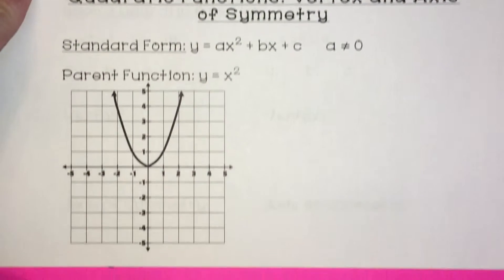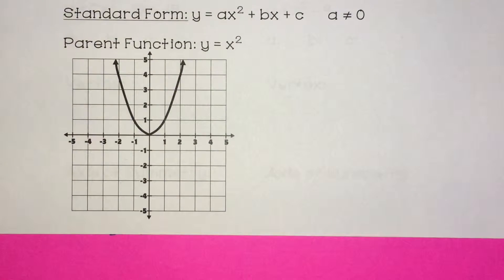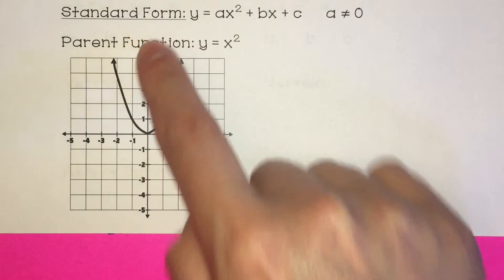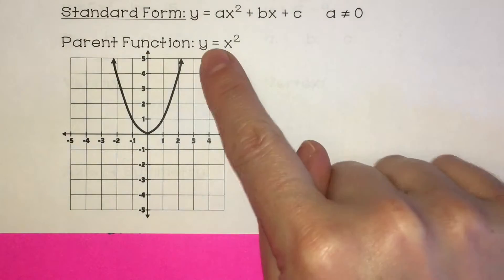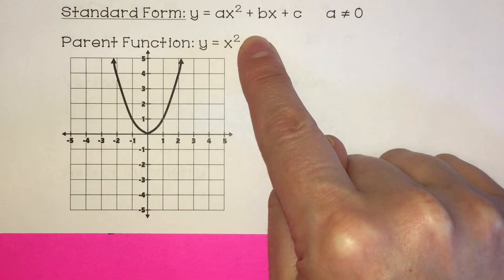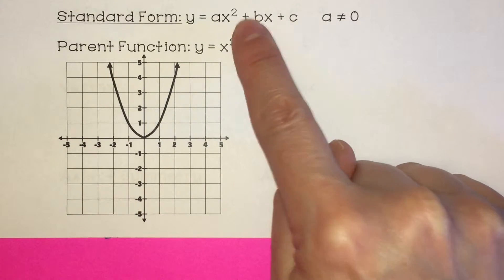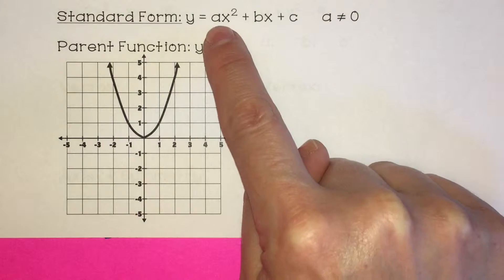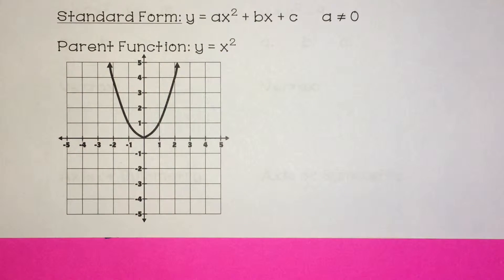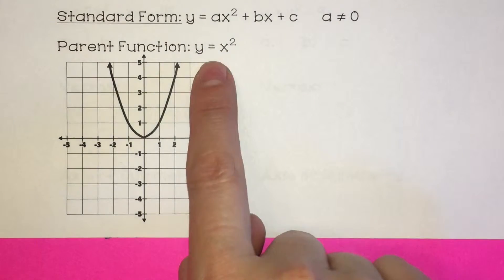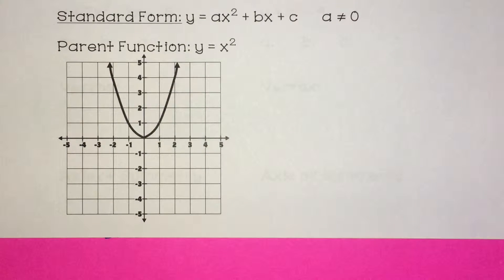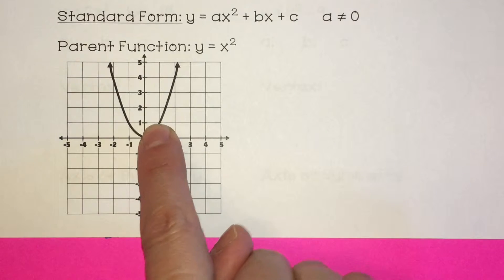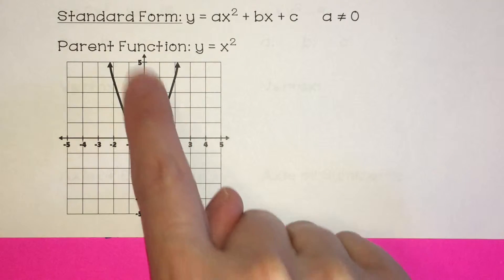This is the parent function of a quadratic function. It's a parent function because it's the most basic type of quadratic function: y equals x squared. In this case, both b and c would be 0 because nothing's added on, and a would be 1 because truly there's 1x squared there. The parent function is going to be this U-shape — you notice it's not a V, it's a U.